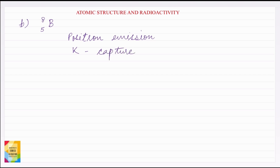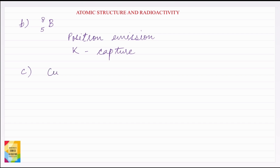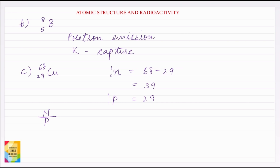In both these cases the N/P ratio will increase. Now in case of C: Copper with atomic mass 68 and atomic number 29. Number of neutrons = 68 minus 29 = 39, and number of protons = 29. In this case the N/P ratio is high, since the number of neutrons is greater than the number of protons.